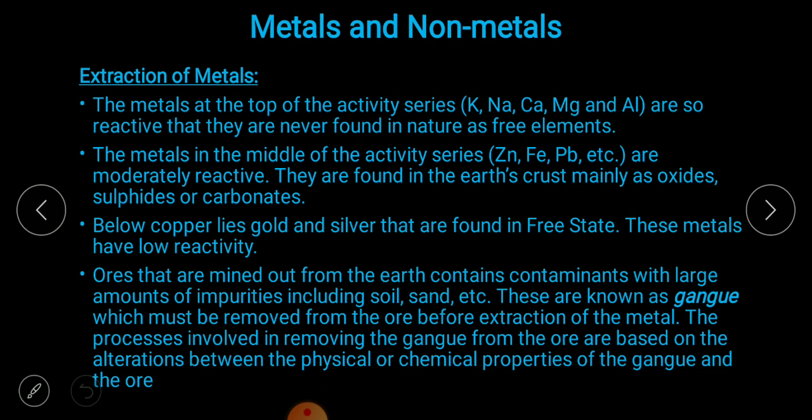The metals in the middle of the activity series are moderate reactive. They are found in the earth's crust mainly as oxides, sulfides, and carbonates. The upper layer of earth is known as the earth's crust. Below copper lies gold and silver, which are found in free state — these metals have the lowest reactivity.